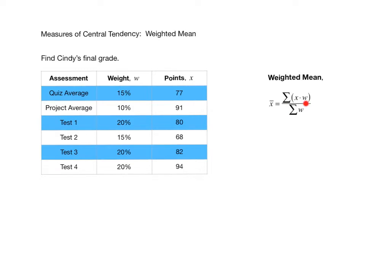Then we need to divide by the sum of the weights themselves. Here, w stands for weight (the percentage) and x is the number of points scored. To find Cindy's final grade, according to the order of operations, we do x times w first because it's in parentheses. We have our x column and our w column, so let's add another column for x times w.